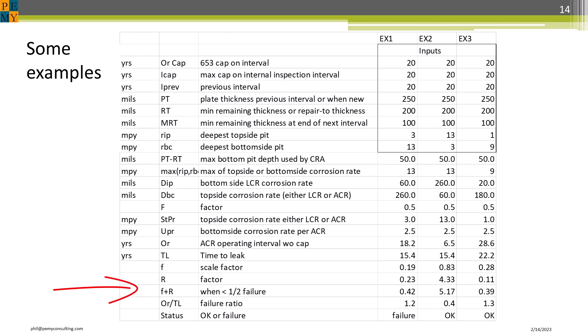In example 1, both top side and bottom side LCRs are 3 and 13 MPY, respectively. Note that F plus R is less than 0.5, and the failure ratio is greater than 1, so there is failure.